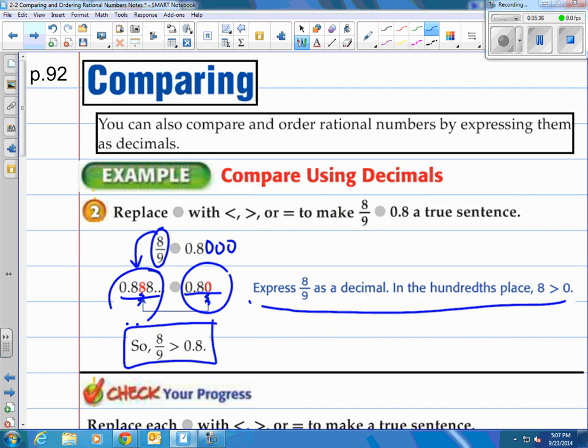Now, easier to look at it on a vertical scale. So if you put 0.888, you know, this keeps going on and on. And then you have 0.8 and you put your 0s in. You can see right here, which one of these is bigger? You can almost drop out the decimal and go, well, 888 is larger than 800. And that's another method to do that.